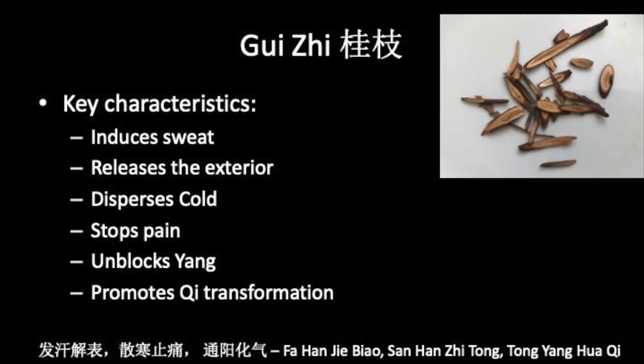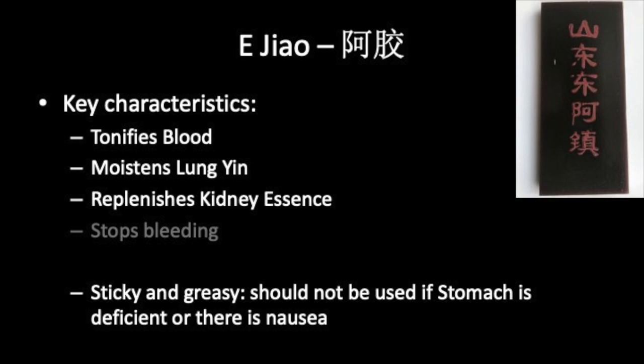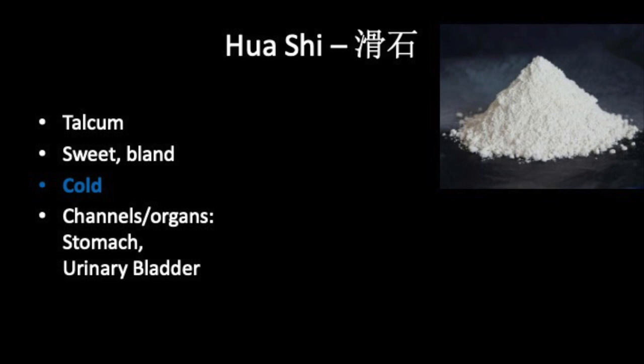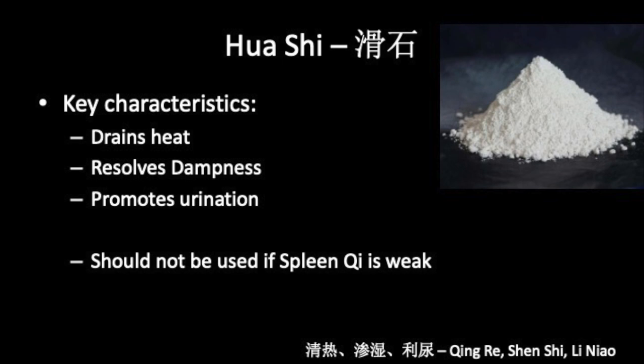E Jiao is donkey hide gelatin. Its properties are sweet and neutral, associated with the kidney, liver, and lung channels. It tonifies blood, moistens lung yin, and replenishes kidney essence. Hua Shi is the mineral talcum. Its properties are sweet, bland, and cold, associated with the stomach and urinary bladder channels. Its sweetness harmonizes stomach qi and alleviates irritability; its cold nature disperses accumulated heat; its blandness leaches out dampness; and as it is slippery, it helps the lower jiao to promote urination.